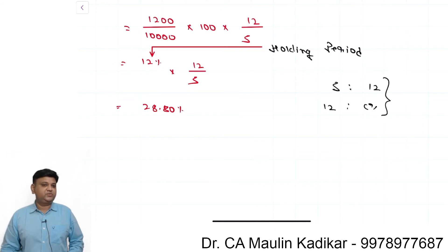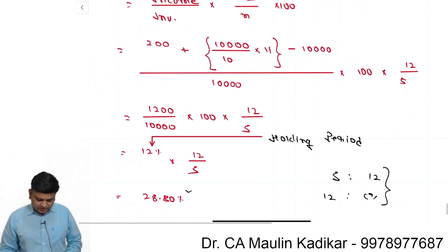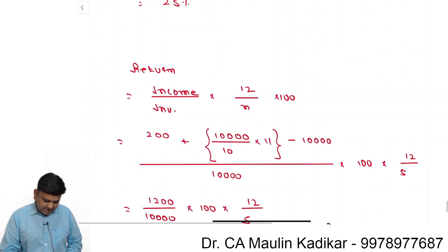So 12 into 12 that is 144 upon 5, that comes to 28.8 percentage, and of course this 28.8 percentage is annualized return.